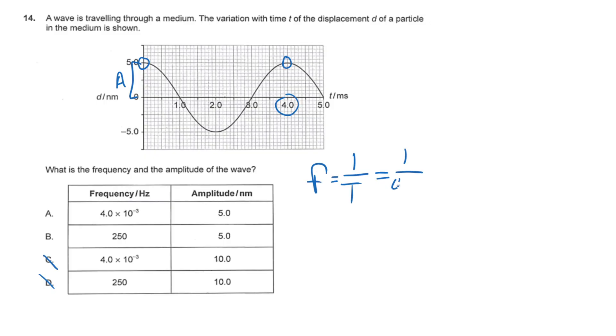We can write 4 milliseconds as 4 times 10 to the negative 3. So what we have for the frequency is 250 hertz. The answer is B.